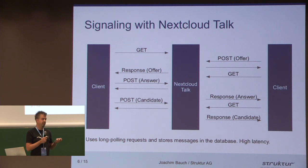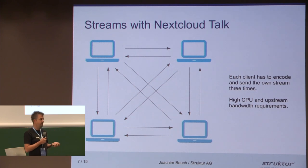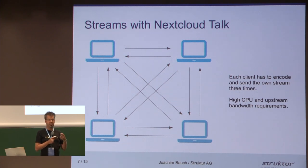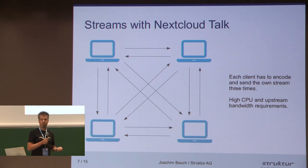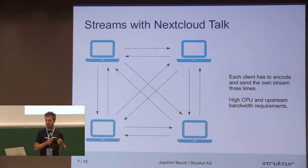This, of course, has a rather high latency. The streams are all peer-to-peer, so if there are multiple people communicating with each other, everybody has to establish a peer-to-peer connection with all the other peers and has to encode and decode all the streams for each participant, so that requires a rather high CPU and upstream bandwidth.